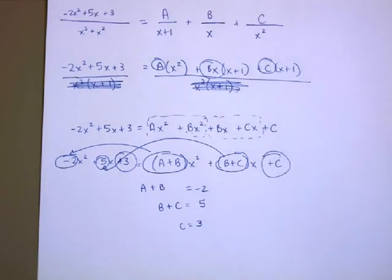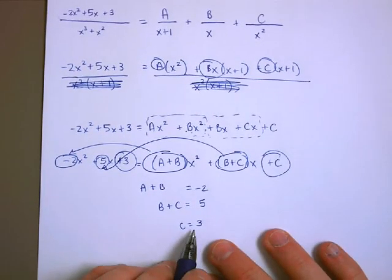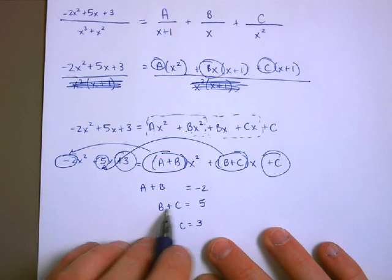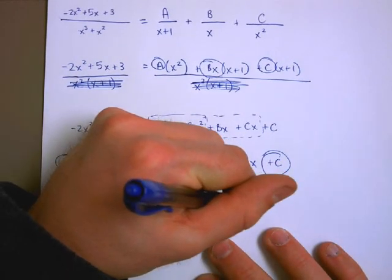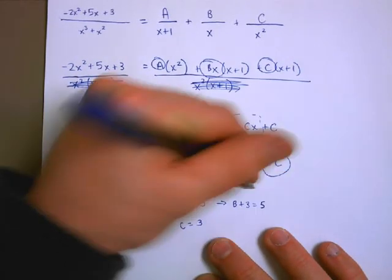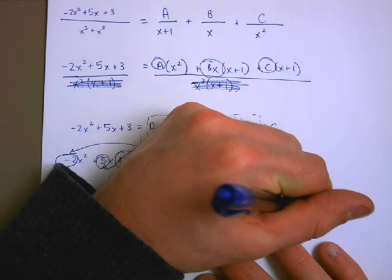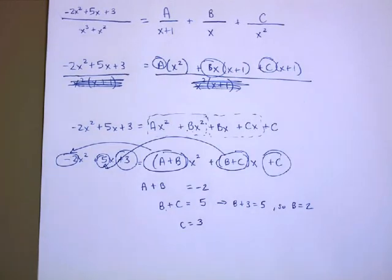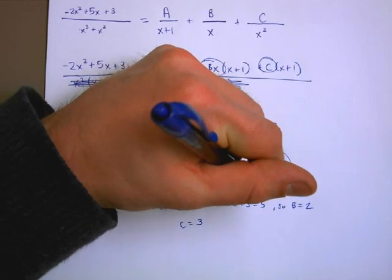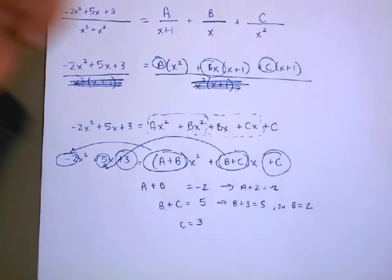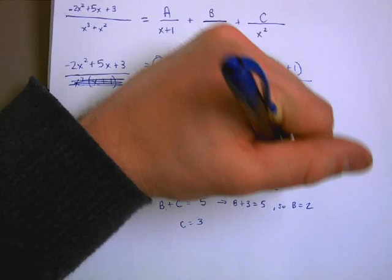Which makes things quite simple, because if c was 3, that means that I know that b plus 3 is equal to 5. So, b must equal 2. And if I know that b is equal to 2, that means that a plus 2 has got to be equal to negative 2. So, a has to be negative 4.